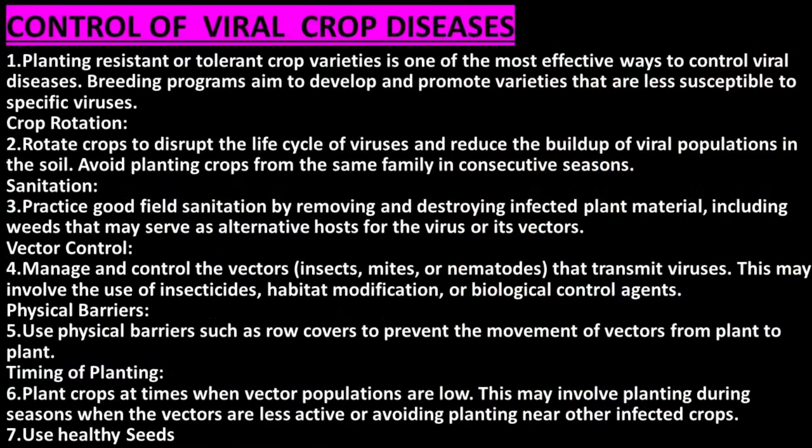Control of viral crop diseases: Planting resistant or tolerant crop varieties is one of the most effective ways to control viral diseases. Breeding programs aim to develop and promote varieties that are less susceptible to specific viruses. Crop rotation — rotating crops — disrupts the life cycle of viruses and reduces the buildup of viral populations in the soil. Avoid planting crops from the same family in consecutive seasons.